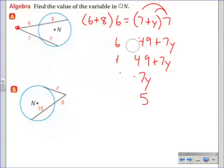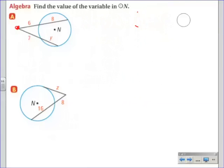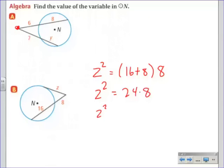Now let me answer question B. The point is outside the circle, so again case 2 or case 3. I see one secant and one tangent line, so I know that's going to be case 3. I need to take my tangent piece, which is Z, and square it. I'm going to set that equal to the entire segment, which is 16 plus 8, and multiply that by the outer piece. So Z squared equals 24 times 8, which means Z squared equals 192.